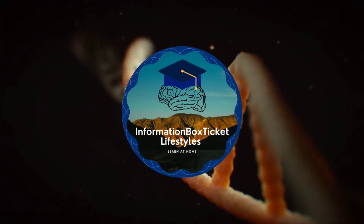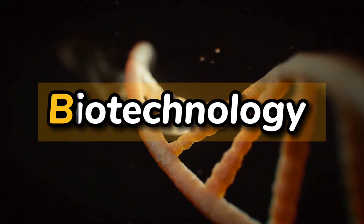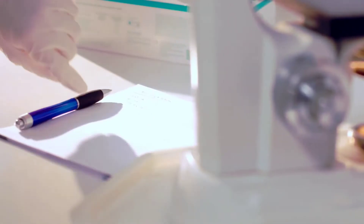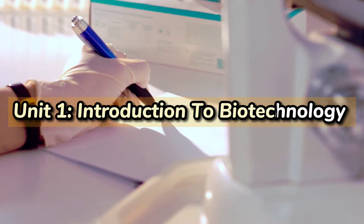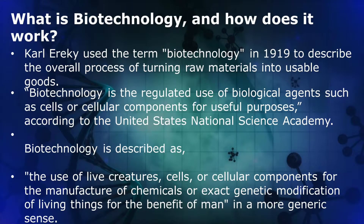Assalamu alaikum everyone. Unit 1: Introduction to Biotechnology — What is Biotechnology and how does it work? Karl Erke used the term biotechnology in 1919 to describe the overall process of turning raw materials into useful goods. Biotechnology is described as the use of live creatures, cells, or cellular components for the manufacture of chemicals or exact genetic modification of living things for the benefit of men, in a more generic sense.